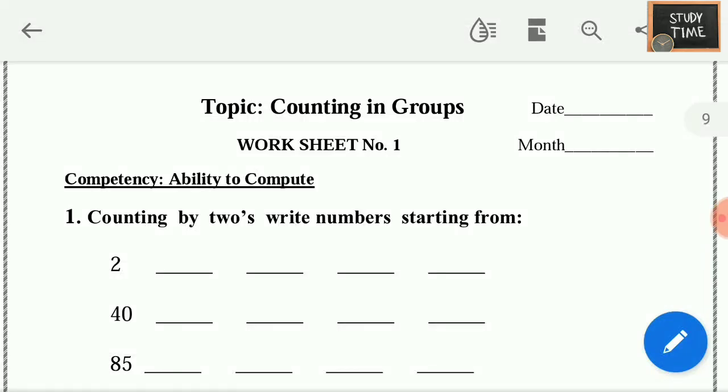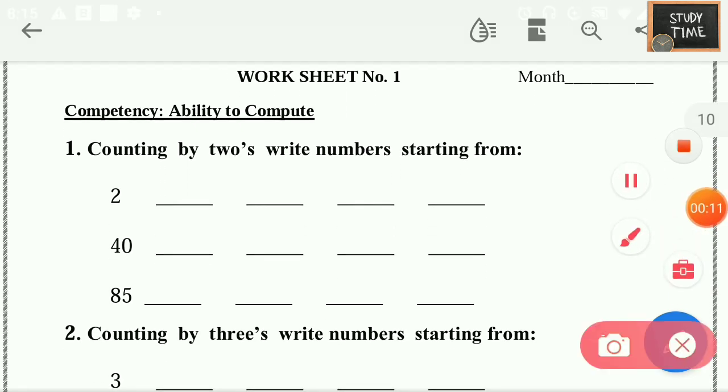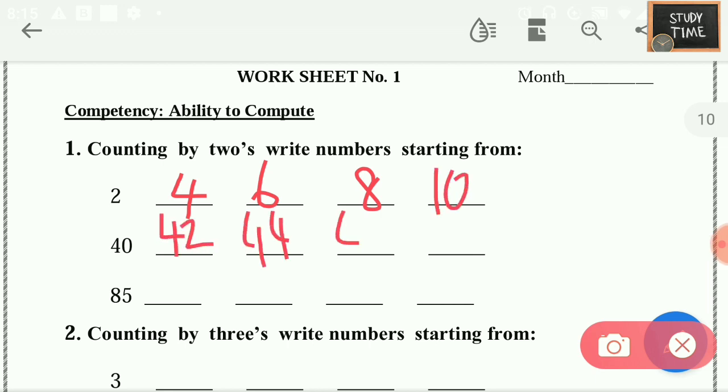Hope you solved the worksheet. We'll discuss the solutions now. Counting by 2's, write numbers starting from: from 2 you have to count numbers - 2, 4, 6, 8, 10. Then 40, 42, 44. Next, for 85 you have to add 2 more: 87, 89, 91, 93.